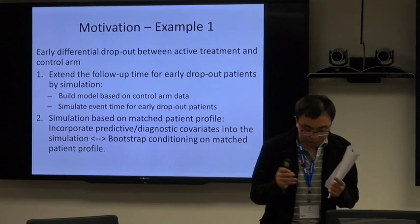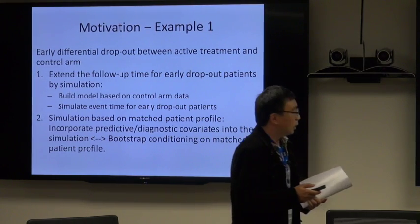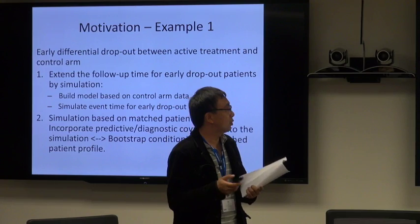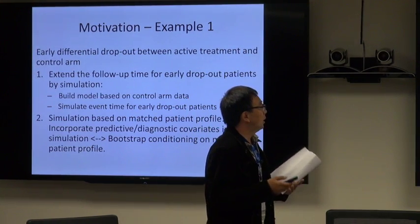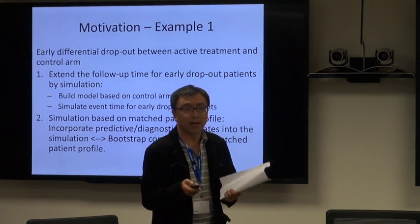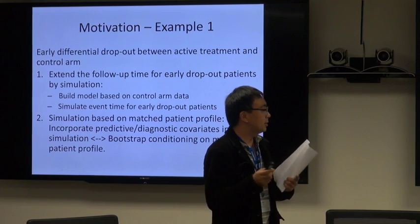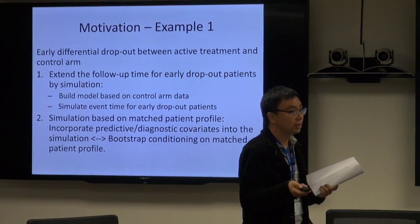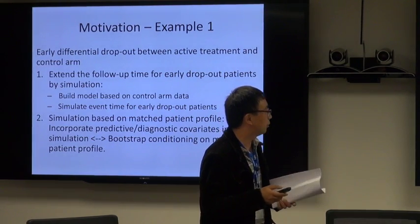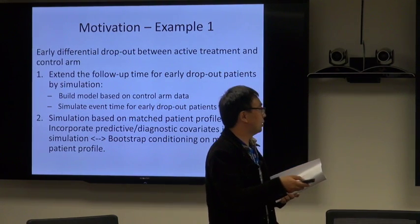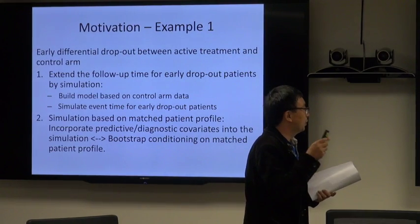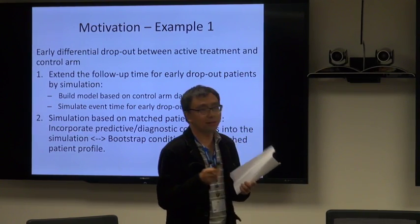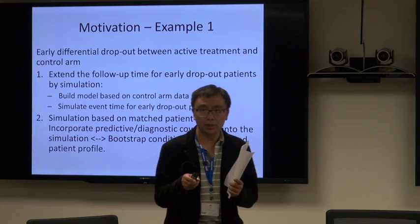The first example is about simulation and data analysis. Think about if we have a randomized clinical study. We may have early differential dropout between the active treatment and the control arm. This imbalance may lead to a biased treatment effect estimate. To evaluate this impact, we may extend the follow-up time for early dropout patients by simulation. If we assume that the early dropout patient performs similar as the control arm patient, we can build a model based on control arm data, then use the parameters from the model to simulate event time for early dropout patients. What we want to emphasize is that it is important to incorporate the covariates into this simulation.